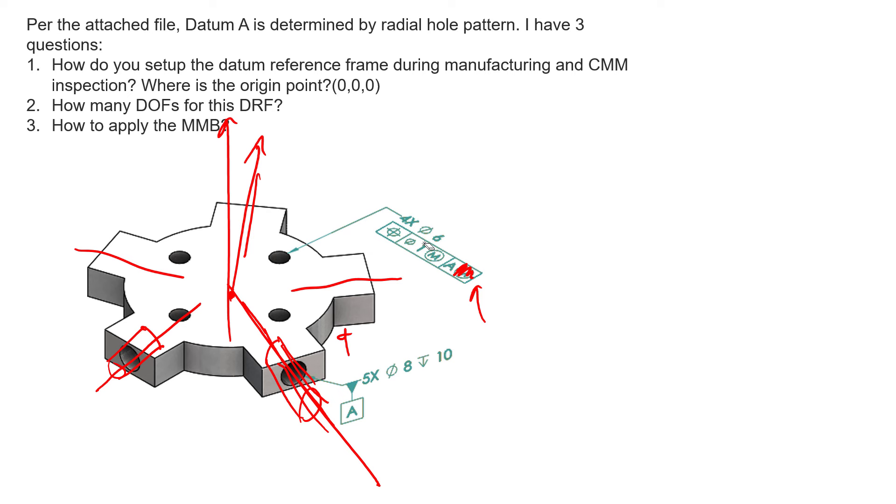This datum reference frame does lock in six degrees of freedom. If you picture all five of those cylinders slowly expanding until they can't expand anymore simultaneously, one's going to stop before the others do. Once they stop, we've controlled all six degrees of freedom. We can no longer disengage from those cylinders, and we can't translate up and down or rotate.